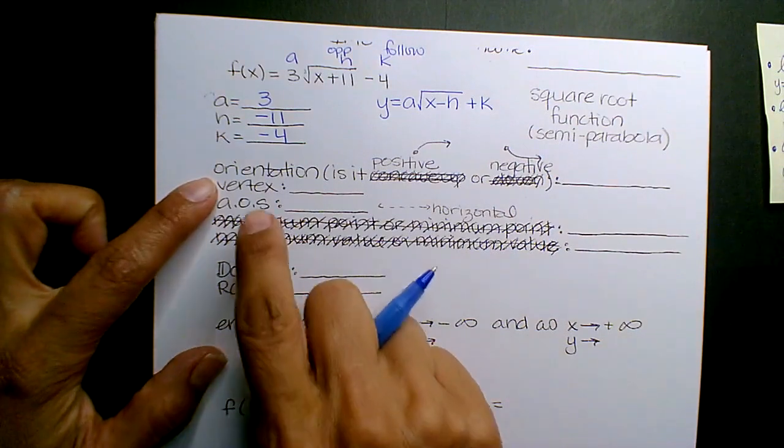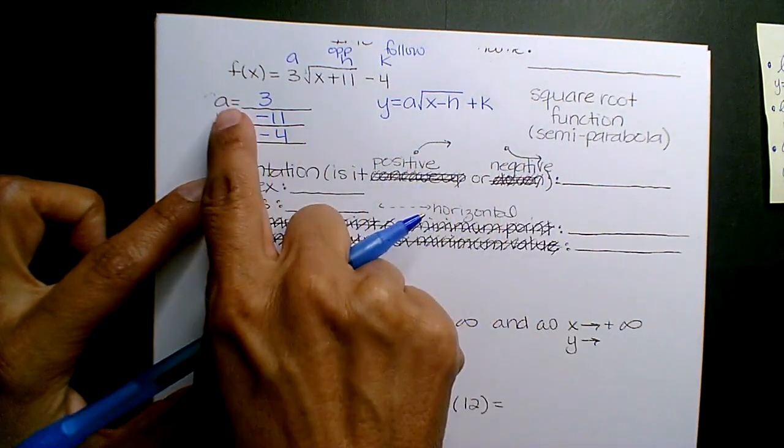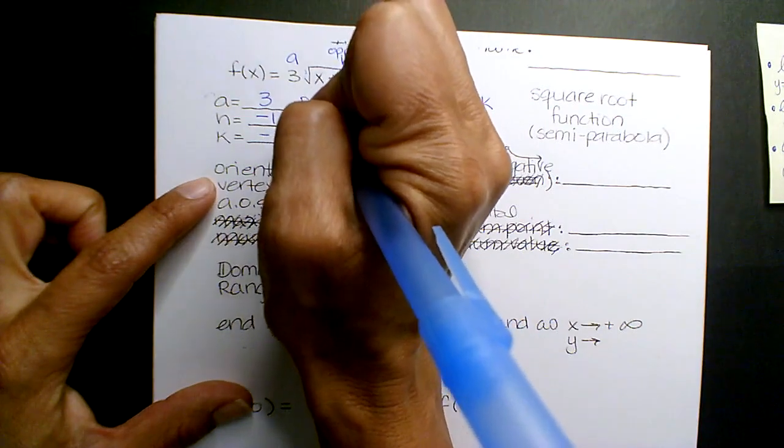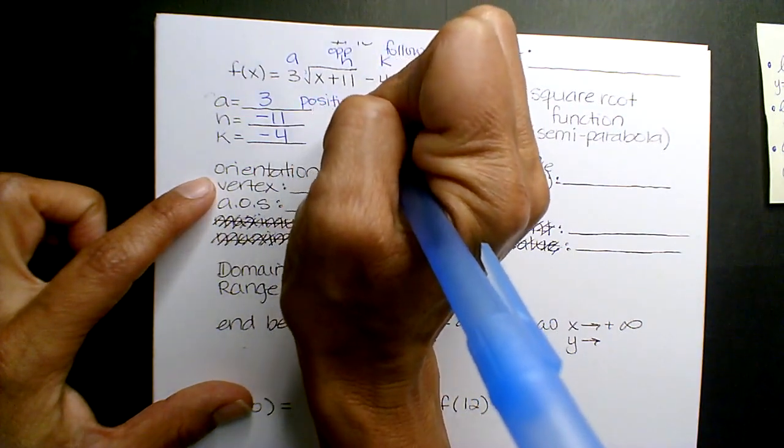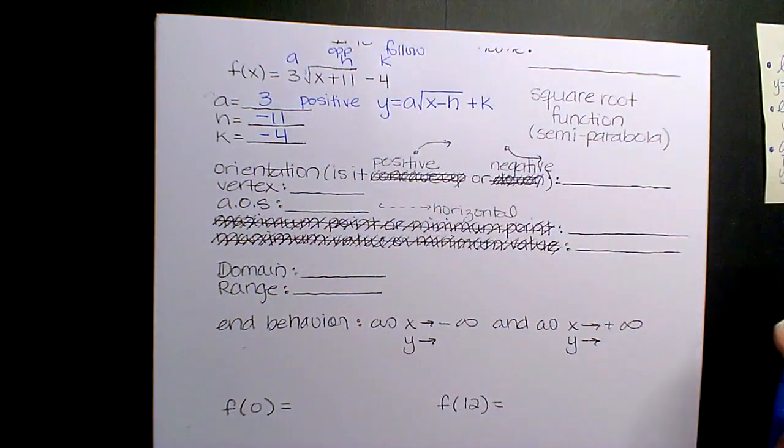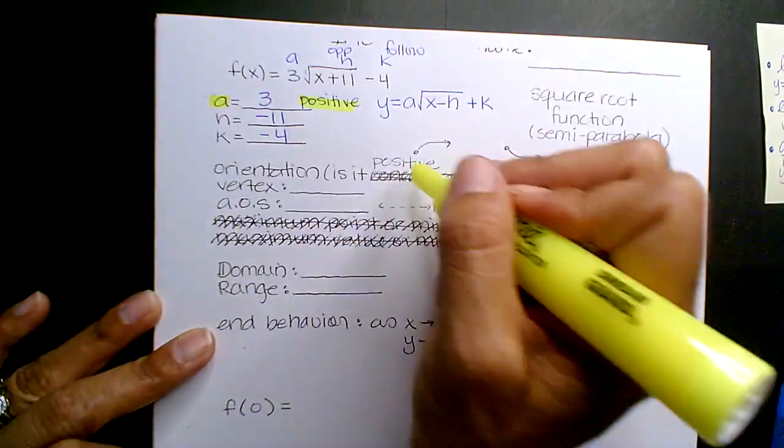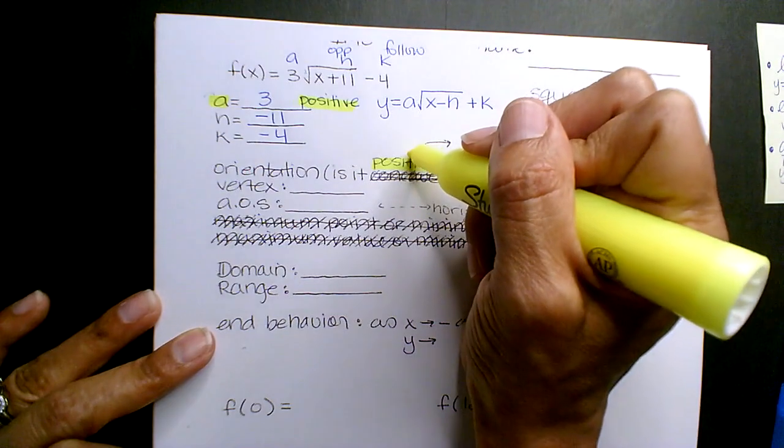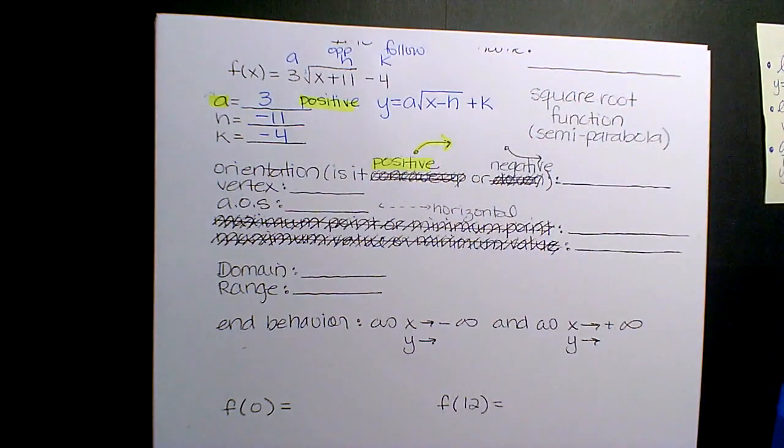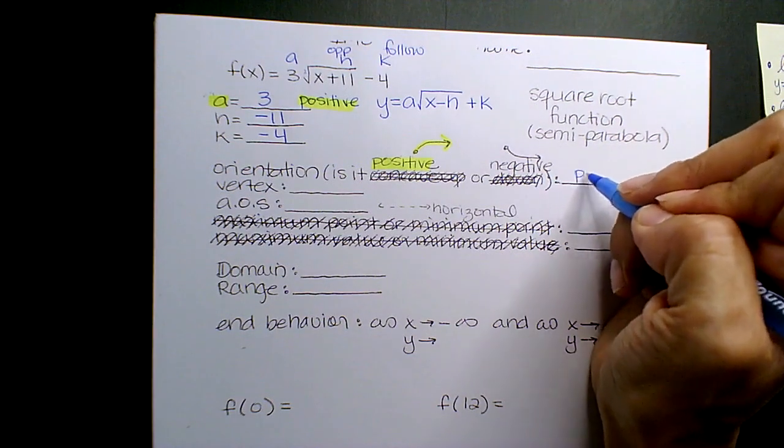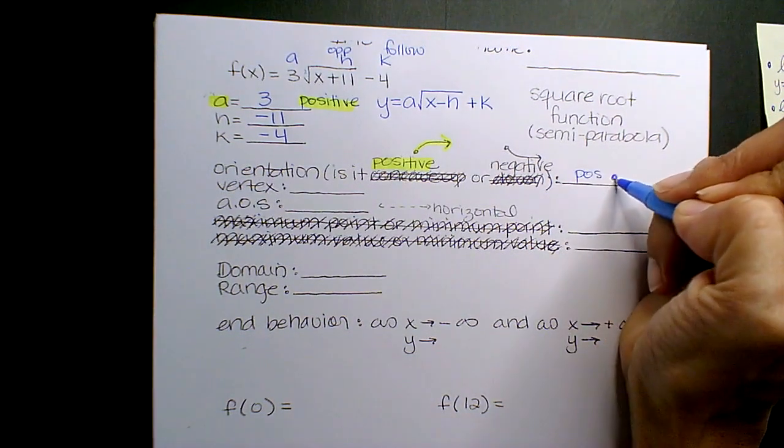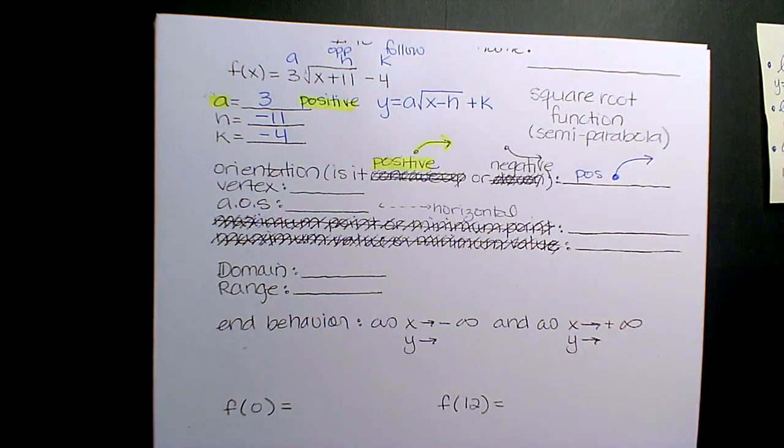Is the orientation positive or negative? Because this A value is positive, it's going to have this positive orientation. So because of the A value being positive, it has a positive orientation, so it's looking in this direction. So I guess I should just write positive. It's the upper side of the semi-parabola.